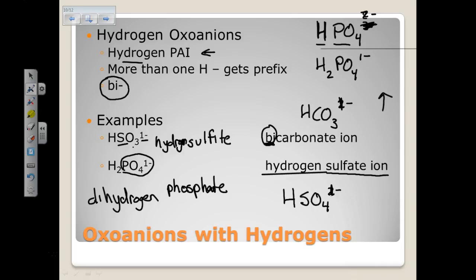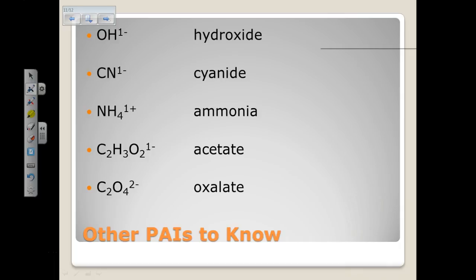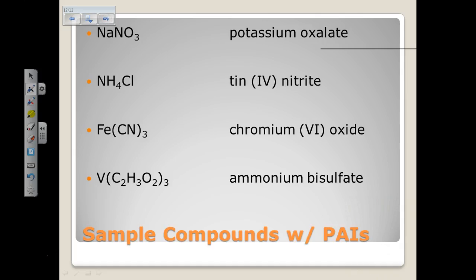There are five other polyatomic ions you just need to memorize that are not considered oxo anions. Most polyatomic ions have oxygen, but we don't name these using the oxo anion naming system. These are: hydroxide, cyanide, ammonia/ammonium, acetate, and oxalate. Definitely try to memorize those.